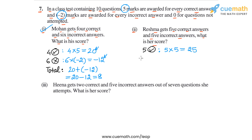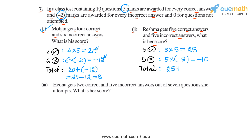For the 5 incorrect answers, her score will be 5 incorrect answers into minus 2 marks per incorrect answer, or minus 10. To calculate Reshma's total score, we simply add these two scores: 25 plus minus 10, which we can write as 25 minus 10, or 15. So Reshma's total score is 15.